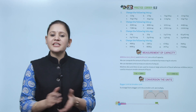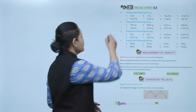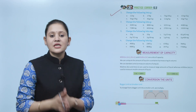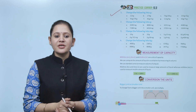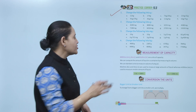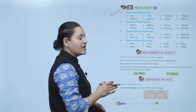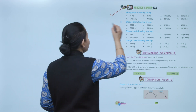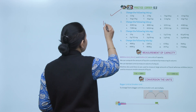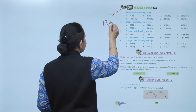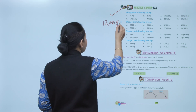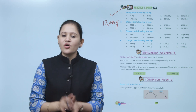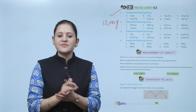Next is Practice Corner 12.2. Change the following into grams: 12 kilograms. As we know, 1 kilogram equals 1000 grams, so 12 kg equals 12 × 1000 = 12,000 grams. Practice all the questions of this exercise. Next is measurement of capacity.